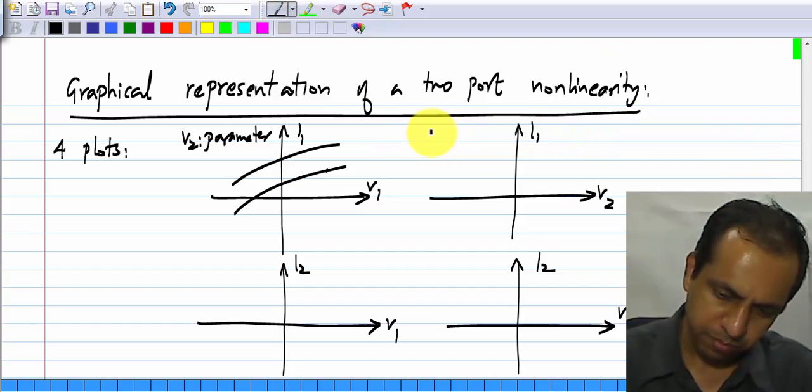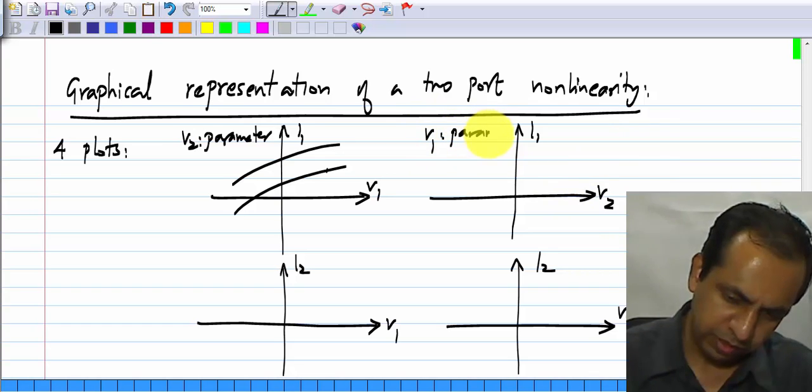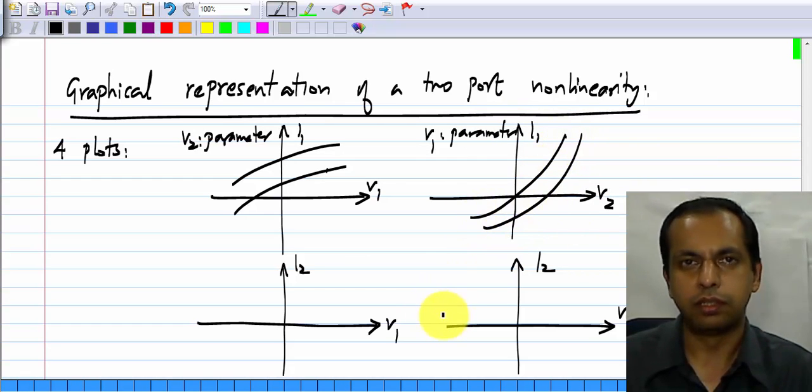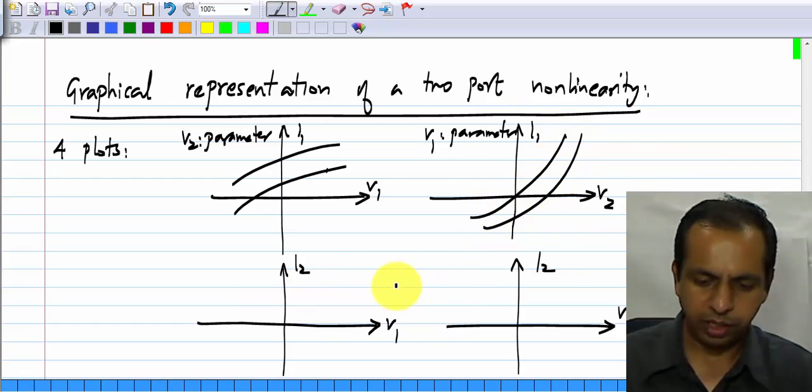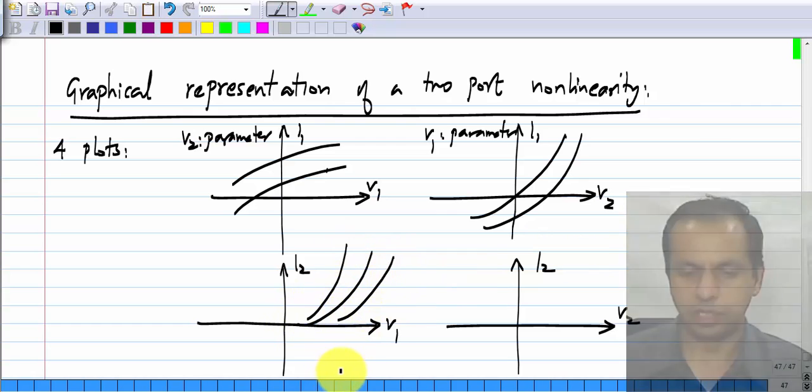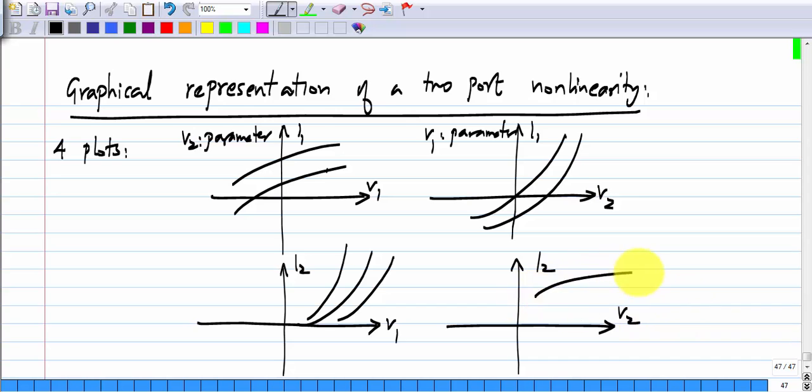Similarly, for this one, we will have V1 as a parameter, and it could be anything. And similarly, I2 versus V1 could be something like that, and I2 versus V2 could be something like that. V2 is a parameter in these two plots, and V1 is a parameter in those two plots.